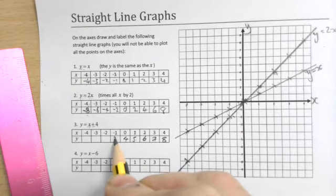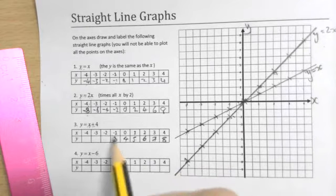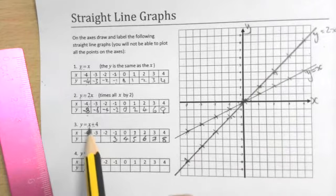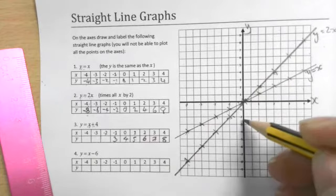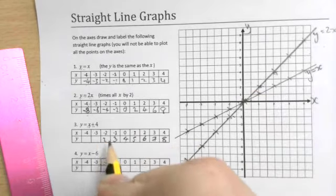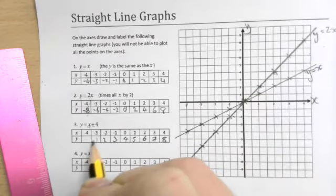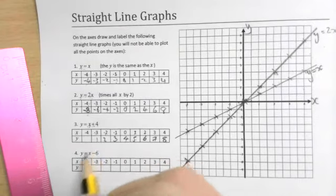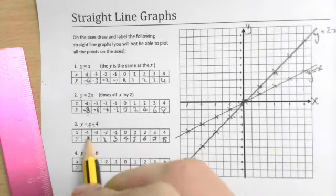So minus one, go up four, takes us to three. If you actually use the scales if you want to help, if I start at minus two and go up four, one, two, three, four, that takes me to two. And then minus three plus four is one.